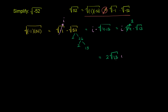I just switched around the order — it's a little easier to read if I put the i after the numbers. So the final simplified form is 2 times the principal square root of 13 times i, which is the same as i times 2 times the square root of 13. This is about as simplified as we can get.